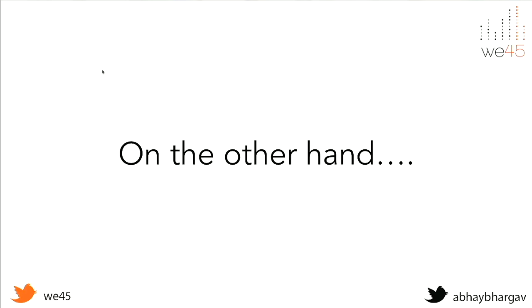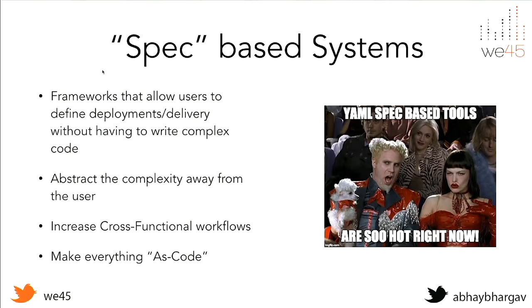If you can figure out a security issue you might run into, you can have developers mitigate it during development. If you have a security issue to test for, pen testers can look for it. If there's a security issue to monitor for, your threat modeling input should tell you to monitor for it. If you do a good job of threat modeling, you gain visibility into the entire pipeline. That's what you want to achieve.